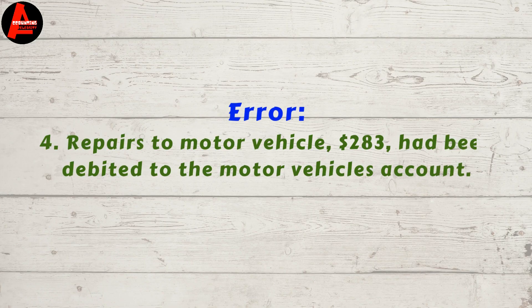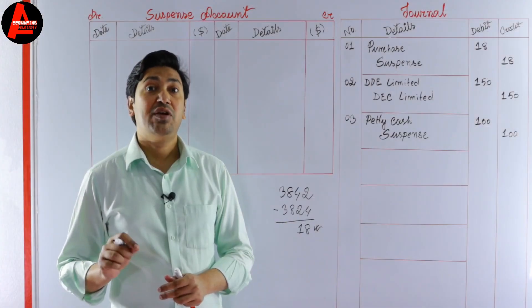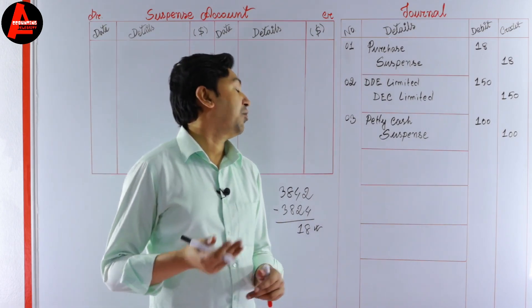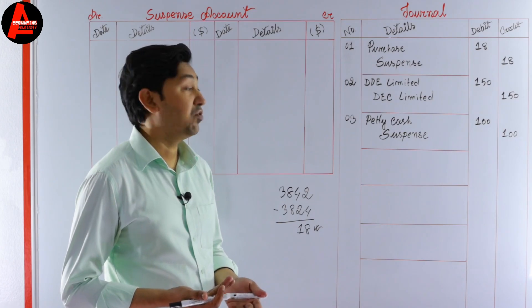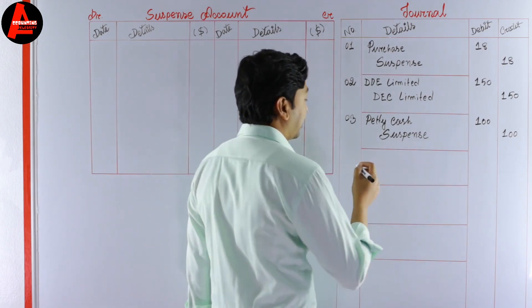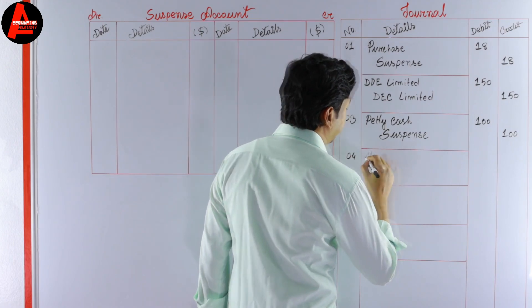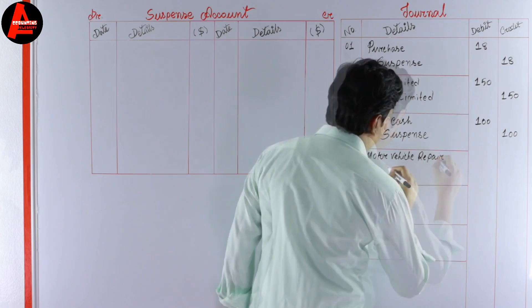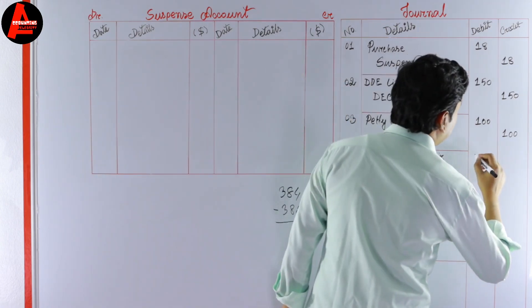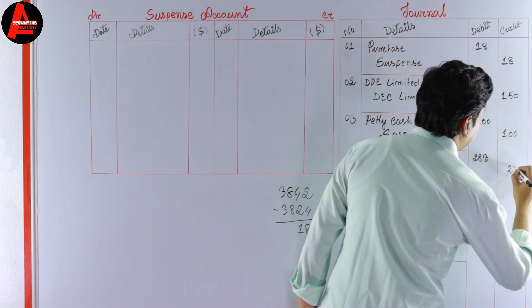Number four: repairs to a motor vehicle, 283 dollars, had been debited to the motor vehicles account. This is an error of principle — an expense treated as an asset. To rectify: motor vehicle account was debited mistakenly, so we now credit the motor vehicle account, and repairs of motor vehicle will be debited as an expense. Motor vehicle repairs to be debited and motor vehicle account to be credited — amount is 283 dollars on each side.